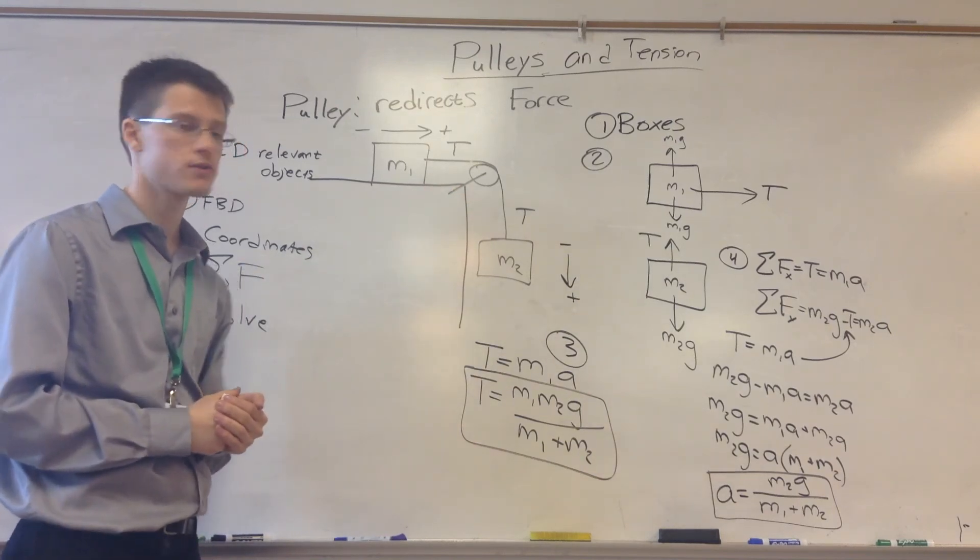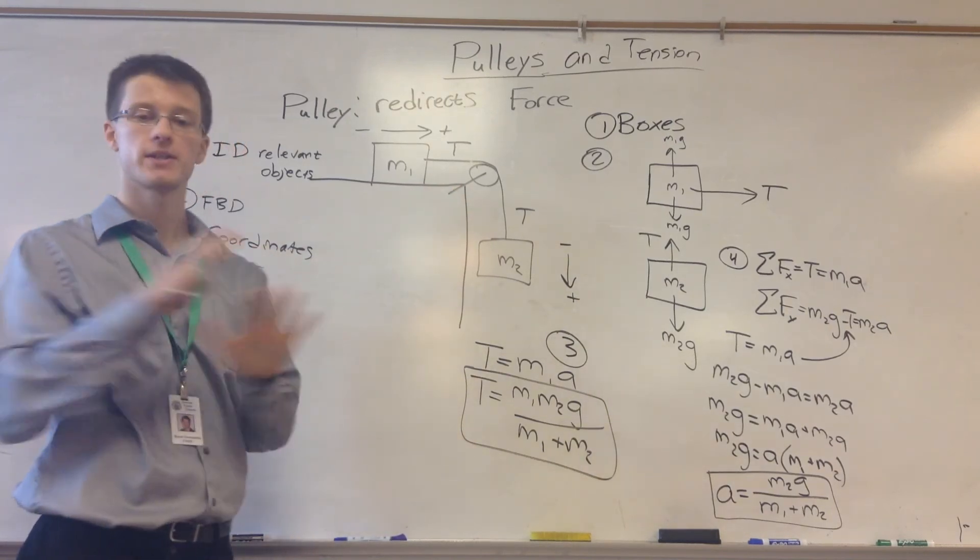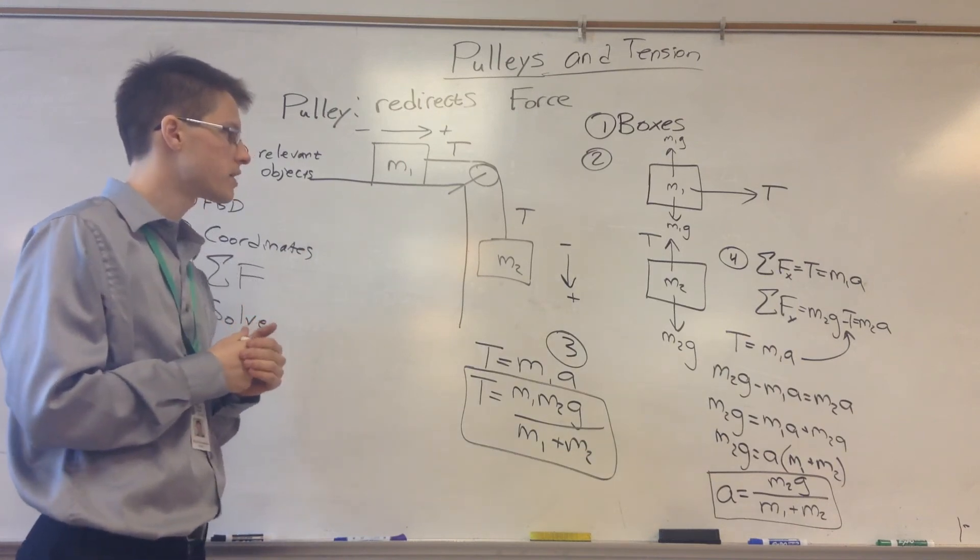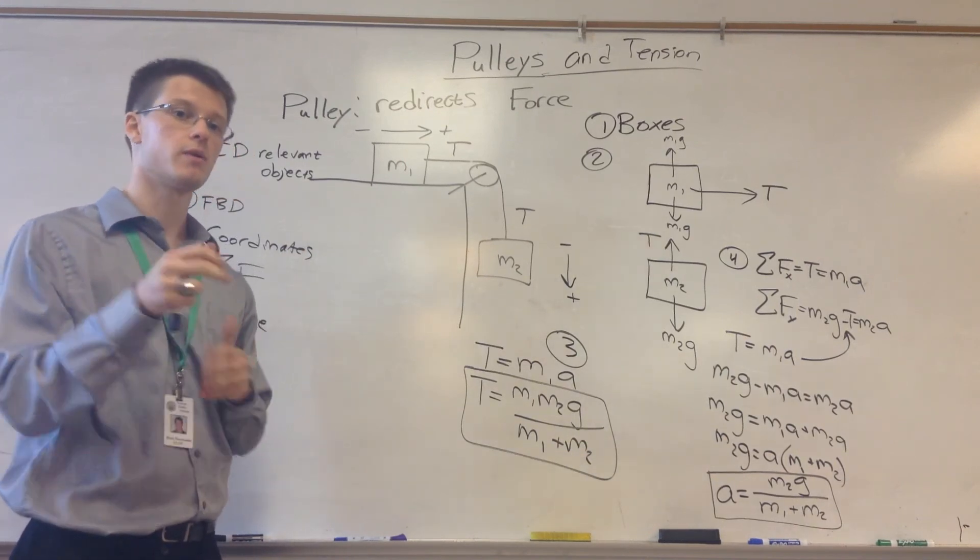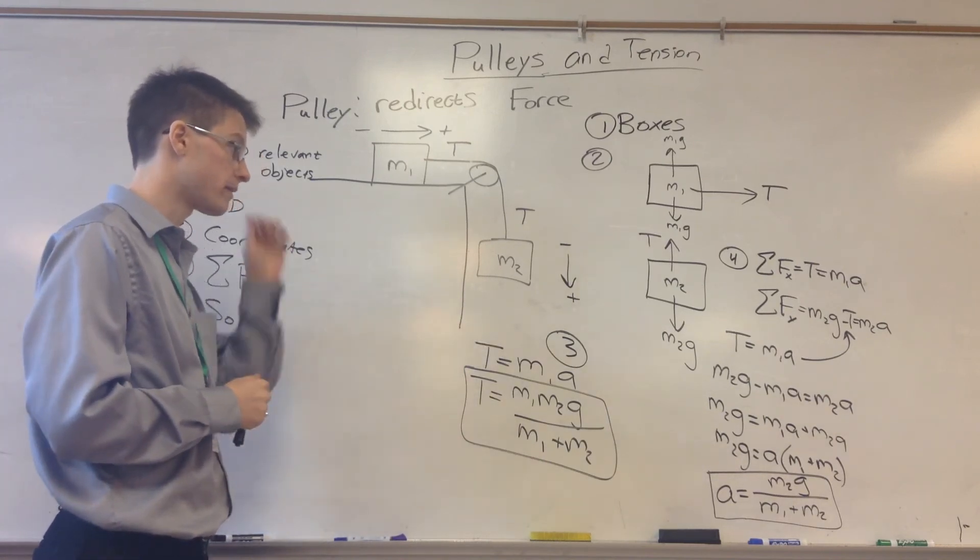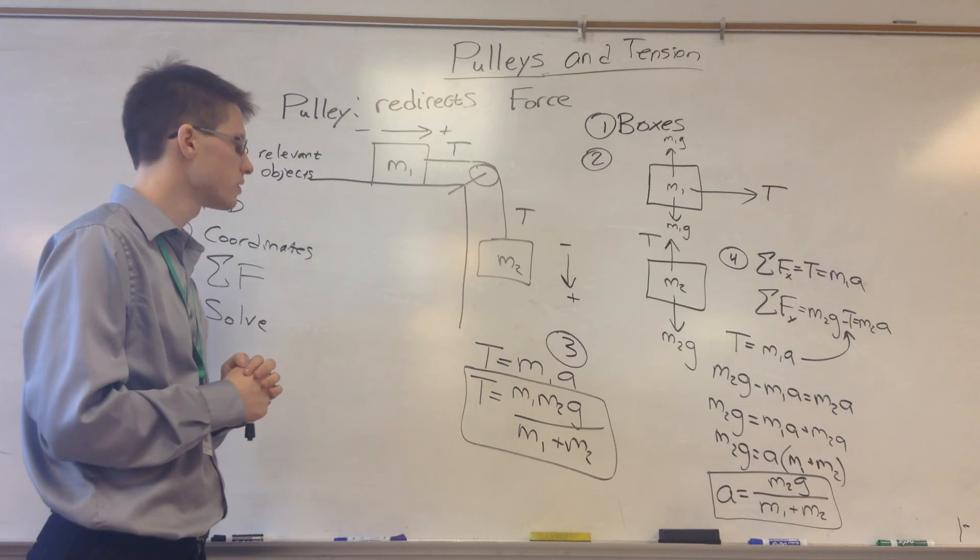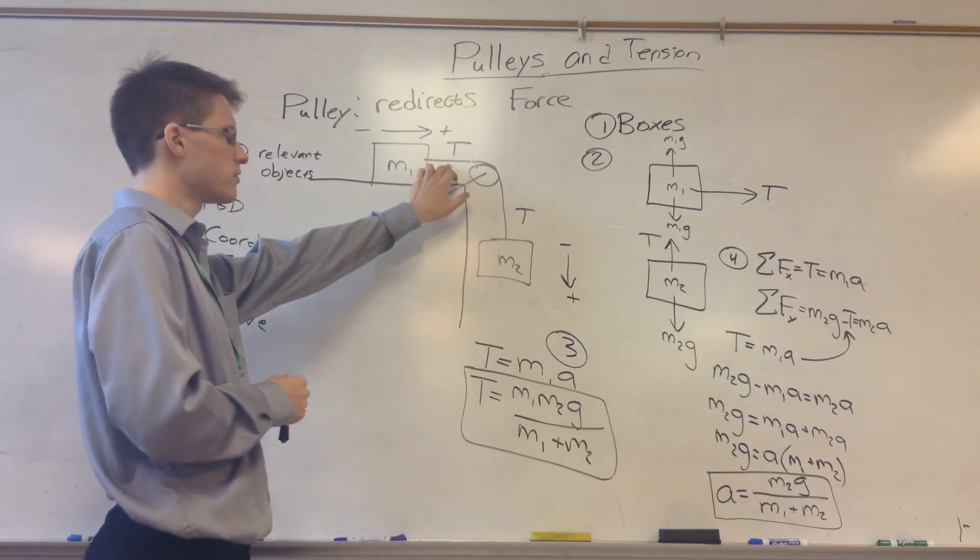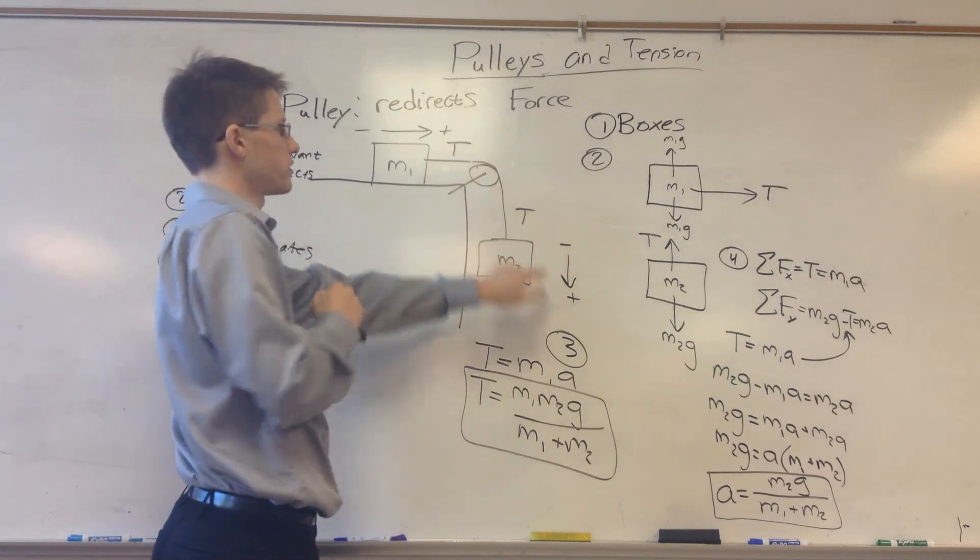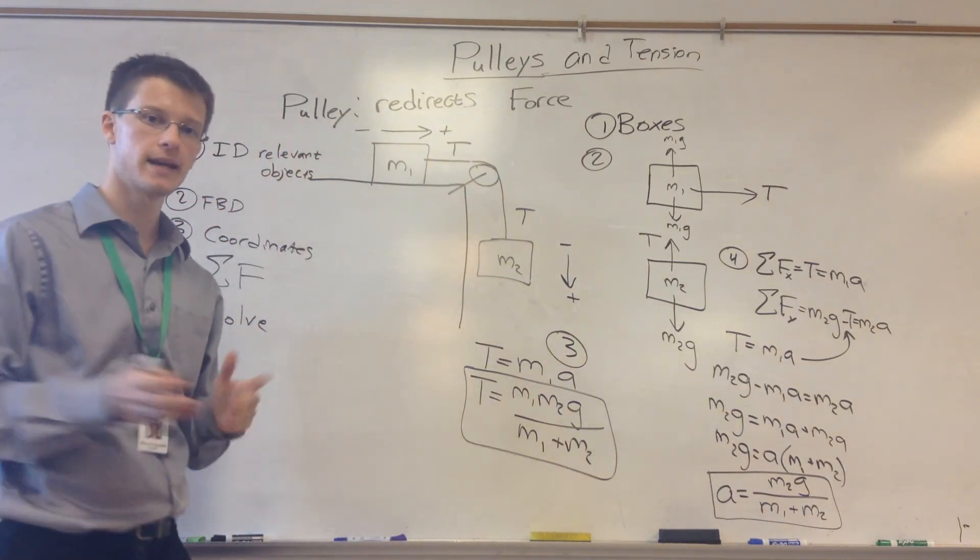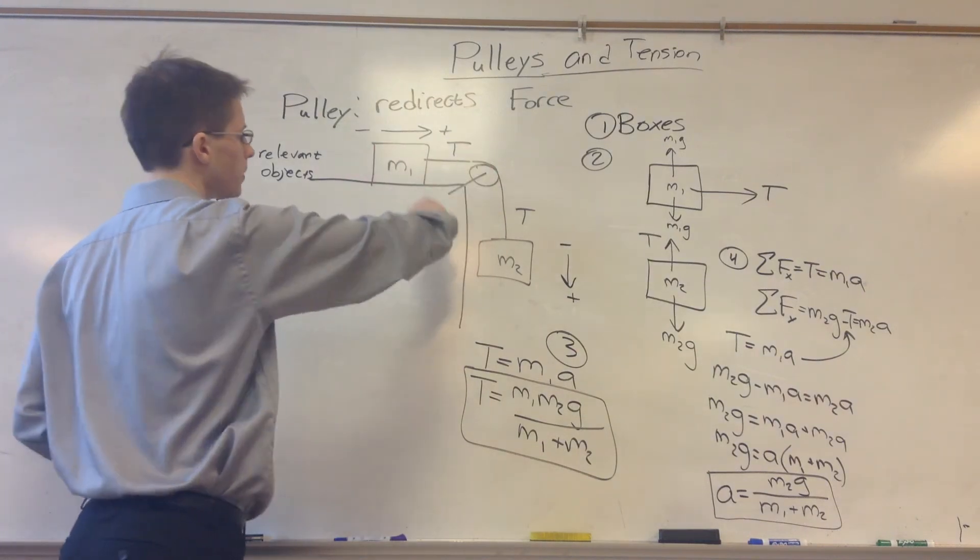That is how you approach problems that have pulleys and tension. Pulleys just redirect forces, so you basically set this up the same exact way you would as anything else. Tension is going to be an unknown quantity generally, and you're going to want to solve for that tension through this substitution method. Additionally, make sure when you have pulleys like this and the tension in the rope, you have to choose your coordinates very carefully.